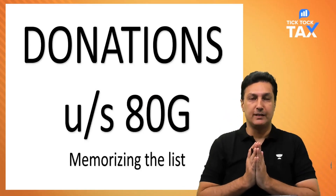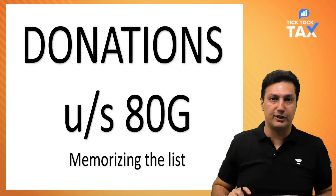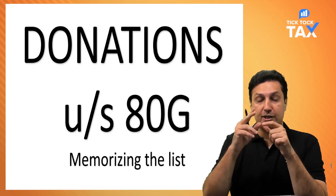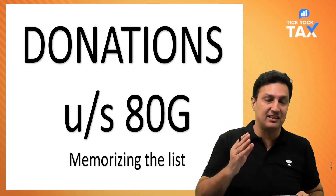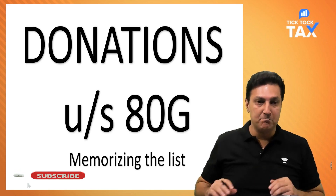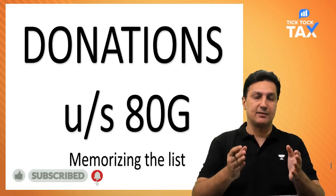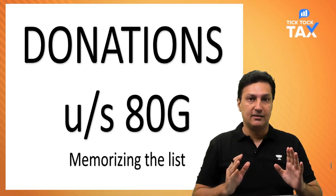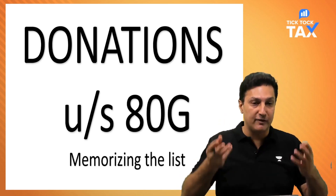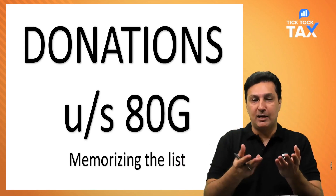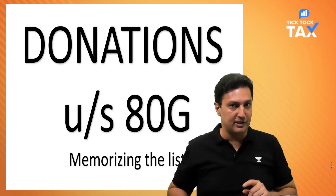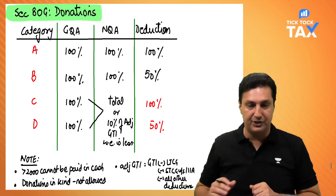Hello and namaskar, welcome back. This video is specifically for my students doing Chartered Accountancy. We're going to be talking about deduction under 80G. This is a section where many students struggle because the list is hard to remember. So here we will try and simplify it for you. Memory is one of your main assets — in paper you understand it, but books aren't allowed, so we need to memorize. Today we'll try and learn that list in the next 10 minutes.